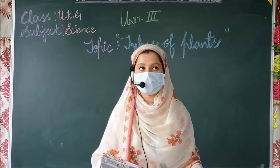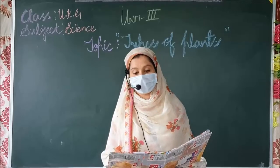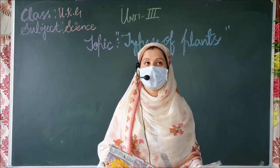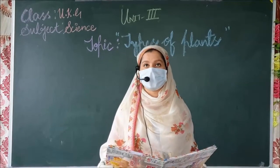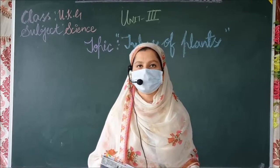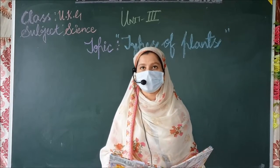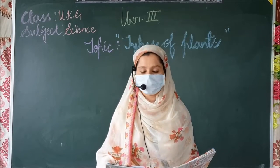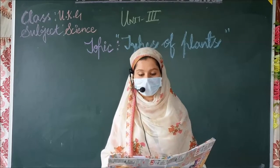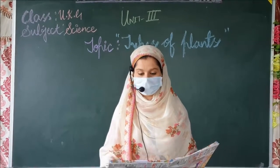Rose plant which you can see, jasmine and lemon — these are medium-sized plants called shrubs.